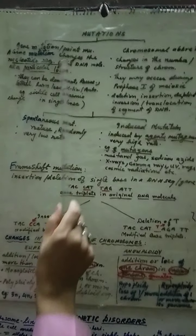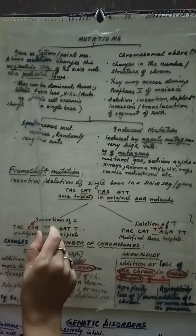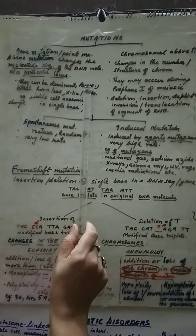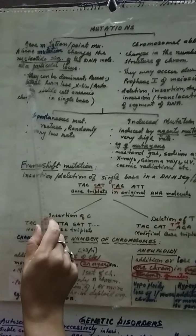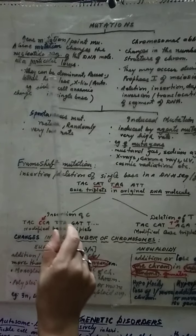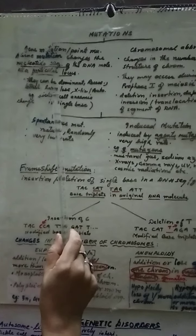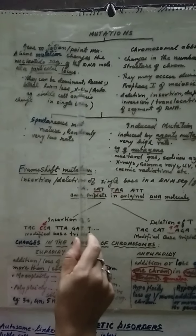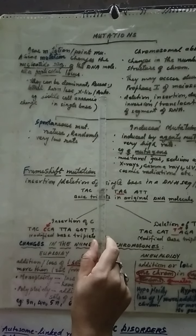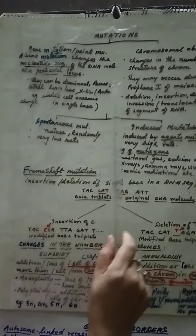That's why it is called point mutation. They can be dominant, they can be recessive, they can be lethal also. Lethal means harmful. These mutations can be harmless also, sex linked also or they can be on autosome chromosomes also.